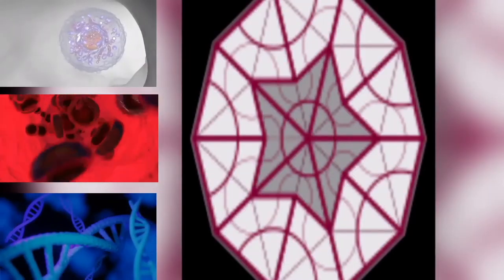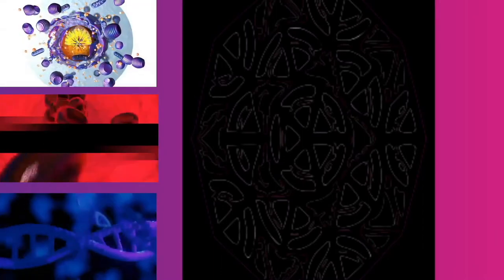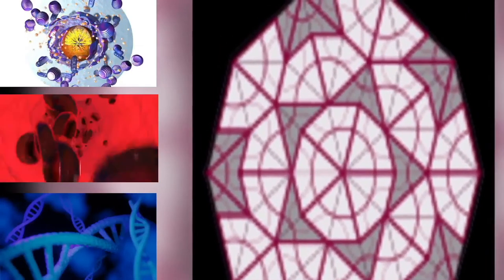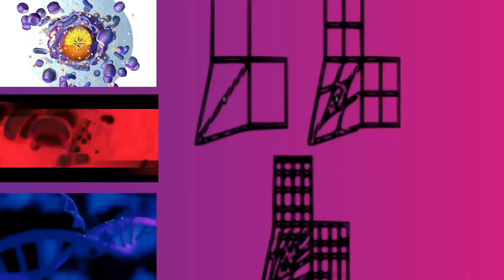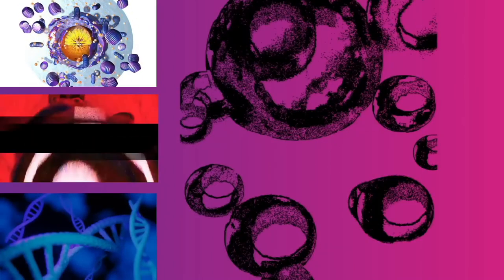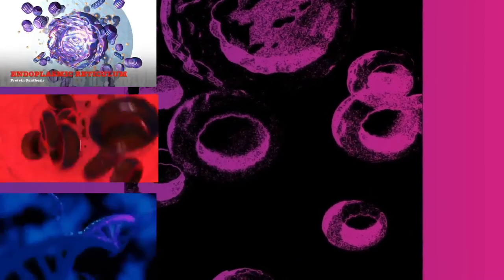Sociality: while prokaryotes are considered strictly unicellular, most conform stable aggregate communities. When such communities are encased in a stabilizing polymer matrix, slime, they may be called biofilms. Cells in biofilms often show distinct patterns of gene expression, phenotypic differentiation in time and space.